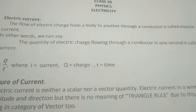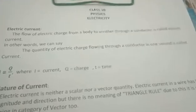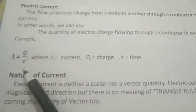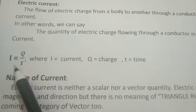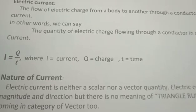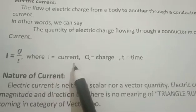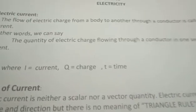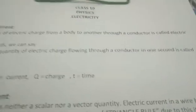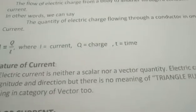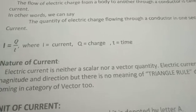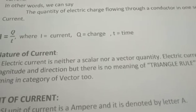So we have got two definitions of current. From the basis of the second definition we can get the formula of current. The formula is I = Q / T, where I represents current, Q represents charge, and T represents time. It means that the electric charge flowing through a conductor in one second is defined as current, and the formula for getting current is Q by T.